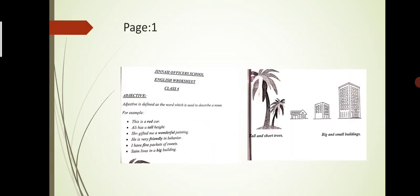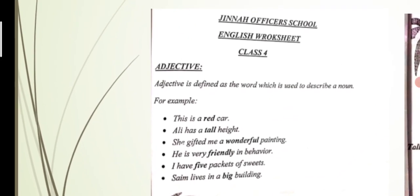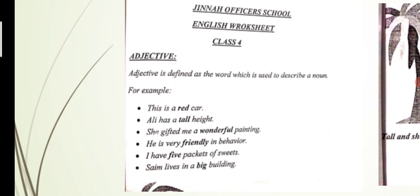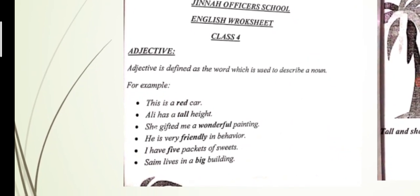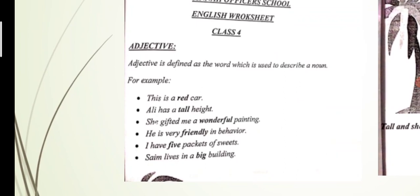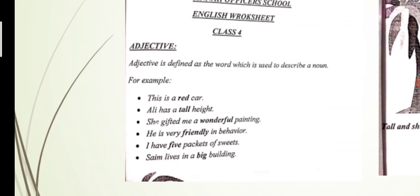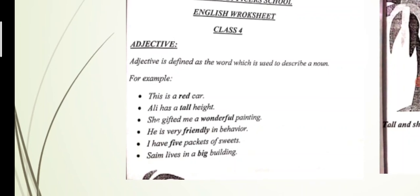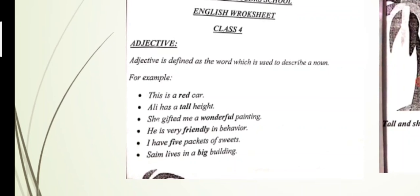Open this worksheet and we will do the concept of adjective. Adjective is defined as the word which is used to describe a noun. Adjective aisa word hai jo ek noun ko describe kare, noun ko bataye. And what is a noun? Noun is a name of a person, place, or a thing. If these things are described, that is called an adjective — it tells the good or bad quality of a noun.